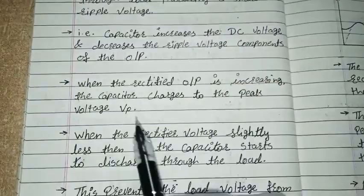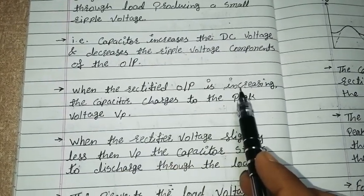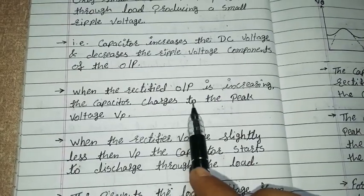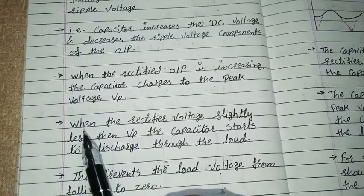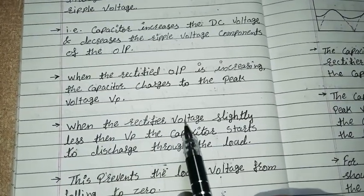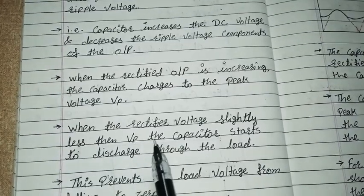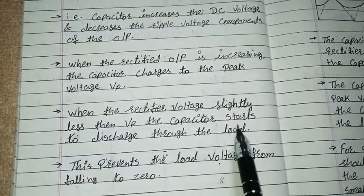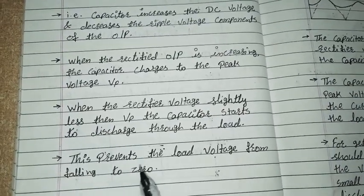Now let's see how it works in practice. When the rectified output is increasing, the capacitor charges to the peak voltage VP. When the rectifier voltage is slightly less than VP, the capacitor starts to discharge through the load. This prevents the load voltage from falling to zero.